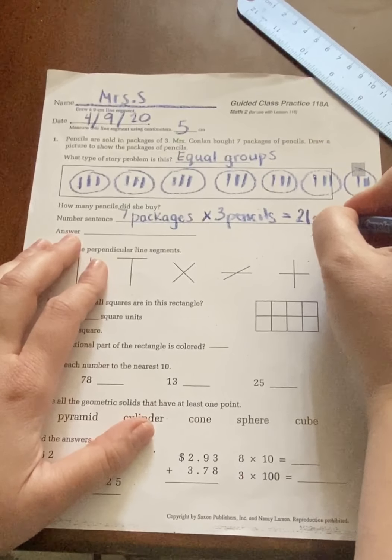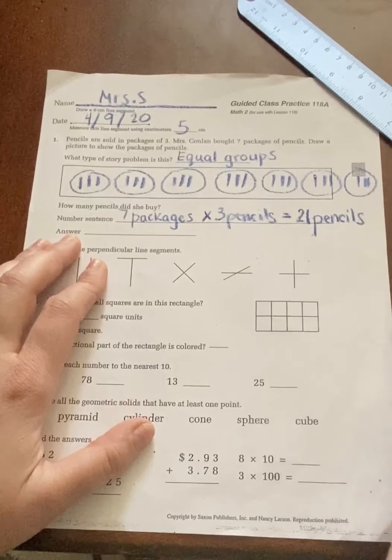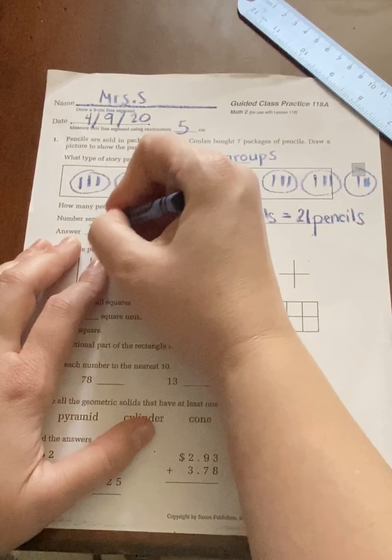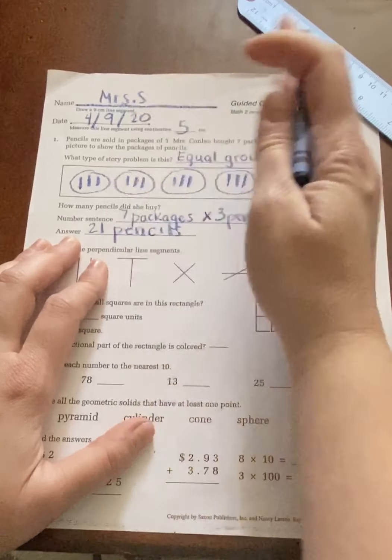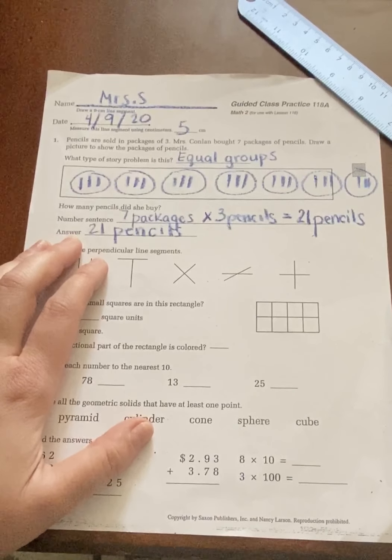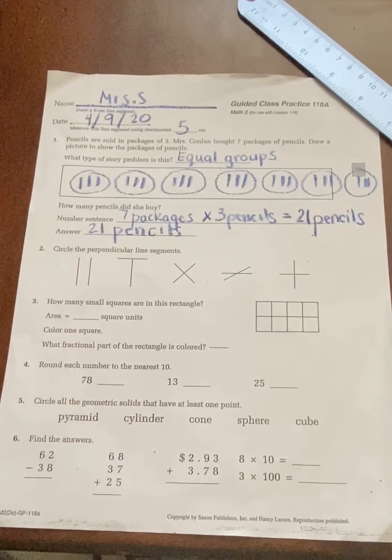And we're going to do twenty-one pencils and twenty-one pencils. I'm actually going to switch to a pencil because I think my crayon with my writing is getting a little sloppy. All right.